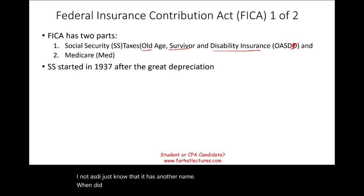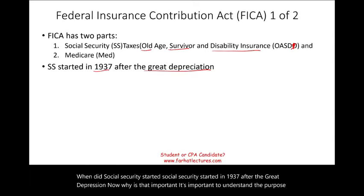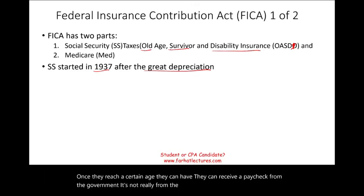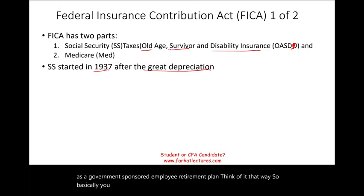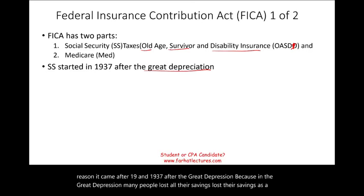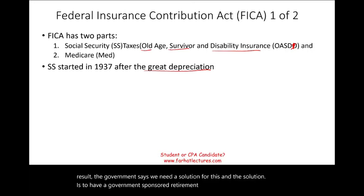Social Security started in 1937 after the Great Depression. The purpose is that once an employee retires and reaches a certain age, they can receive a paycheck — think of it as a government-sponsored retirement plan. In the Great Depression many people lost their savings, so the government created this plan to ensure employees receive help when they retire even if they did not save privately.